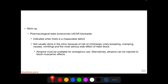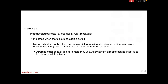Diagnostic tests for myasthenia gravis include tests which overcome muscle weakness: pharmacological tests, the sleep test, and the ice pack test. Other tests include serum antibody assays, electrophysiology of the neuromuscular junction, CT or MRI of the chest to rule out thymoma, and tests to rule out other autoimmune diseases.